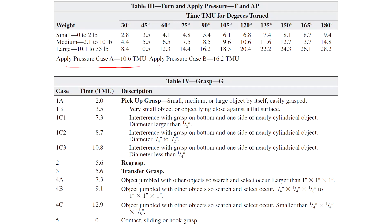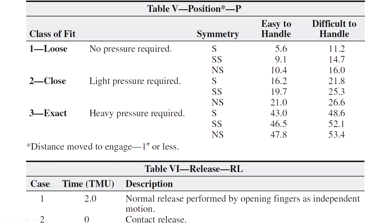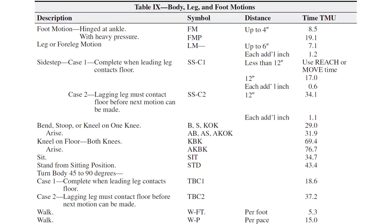Case B of apply pressure involves a follow-up motion like re-grasp, so the re-grasp time is added to case B. This is the grasp table, showing how much time it takes to grab something. All ten different motion tables will be posted as a link to the document on openeditor.com so you can access them.